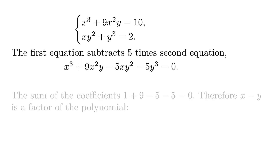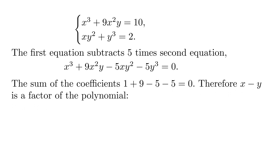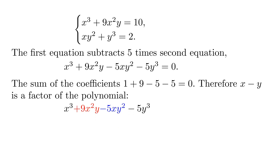Notice that the sum of the coefficients 1, 9, −5, and −5 is zero. Then, when x equals y, the value of the polynomial is zero. In other words, (x − y) is a factor of the polynomial, and we can proceed to factor it.